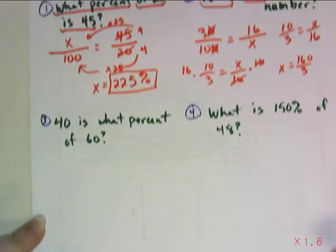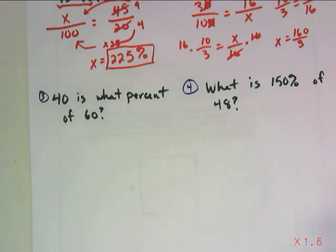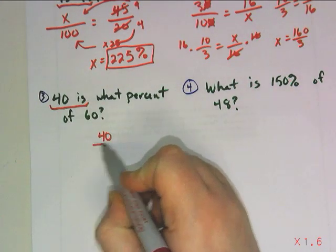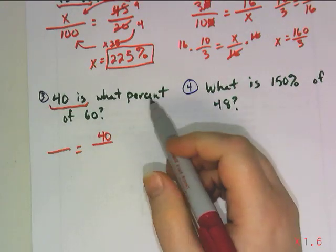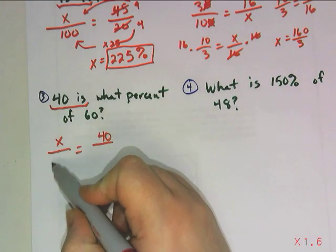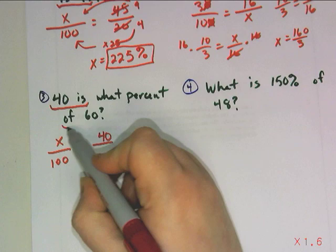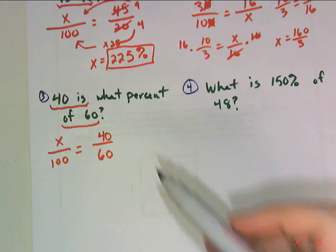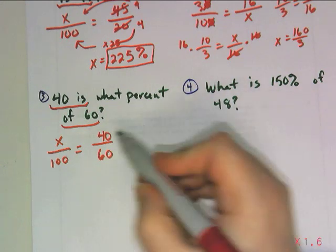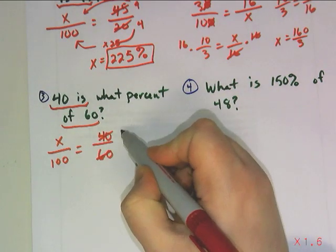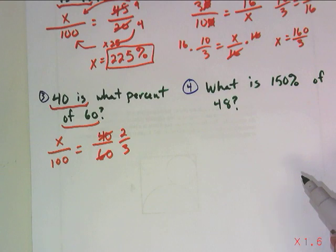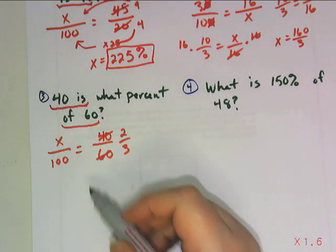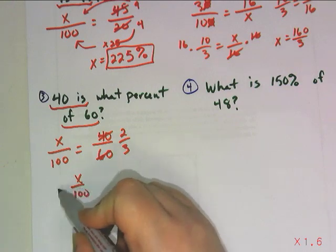Now for number 3, 40 is what percent of 60? So 40 is, telling me that that is the part. What percent, so I know my percent is missing out of 100. Of 60? So there's my whole. Again, probably easiest if I simplify this fraction. I can divide these both by 20 and get 2 thirds. There's no easy scale factor, so to solve this algebraically, I would need to multiply both sides by 100.